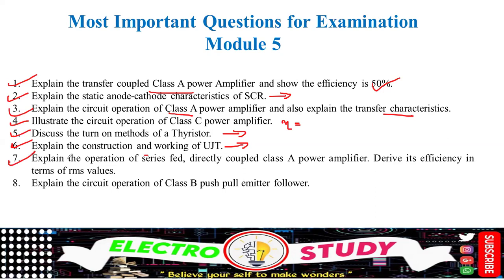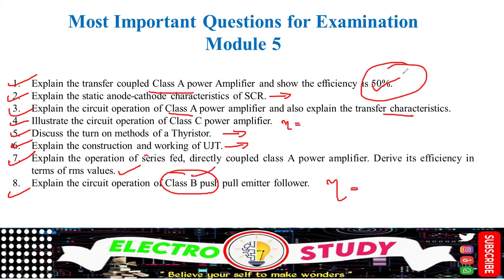Explain the operation of the series, directly-coupled Class A amplifier and derive the efficiency in terms of RMS value. Also, explain the operation of the Class B full emitter amplifier and calculate its efficiency. For a Class A amplifier you get 50% efficiency — how about Class B and Class C? You need to calculate those.